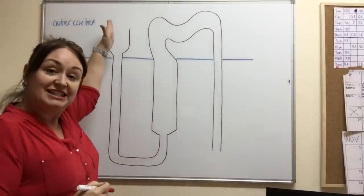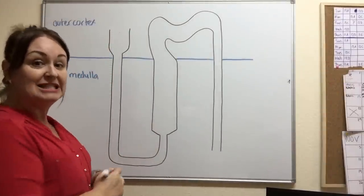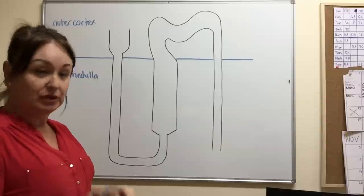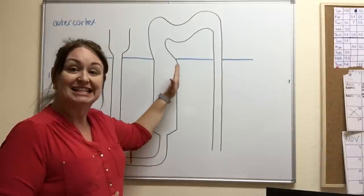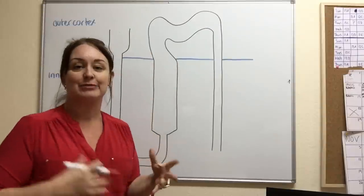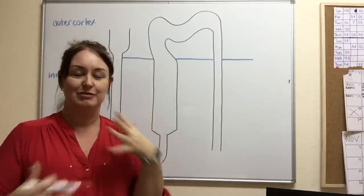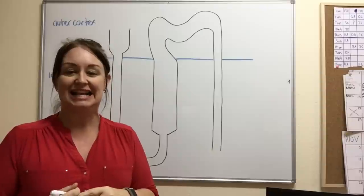So this is our descending limb. Descending goes down and this is our ascending limb. The ascending limb goes up into the atmosphere. That's how I always remembered which way around ascending and descending were.